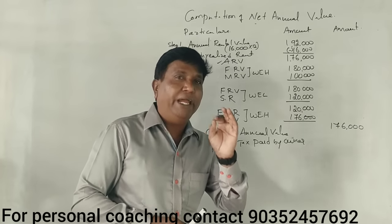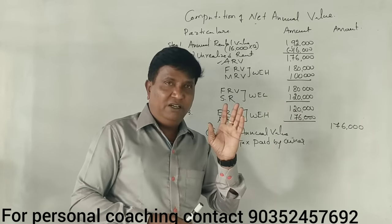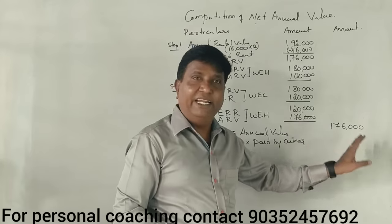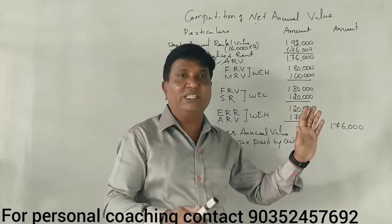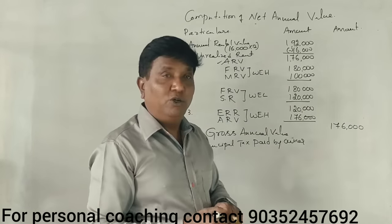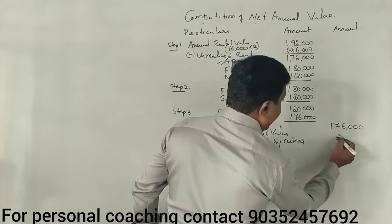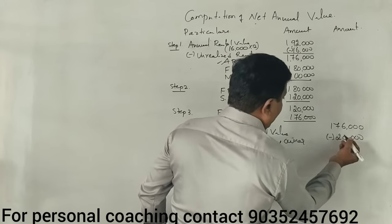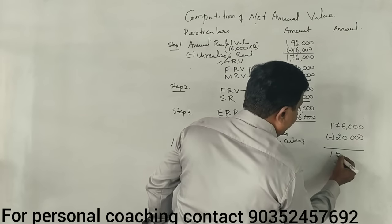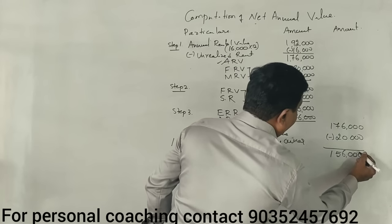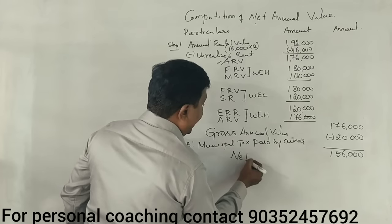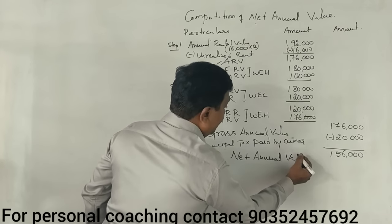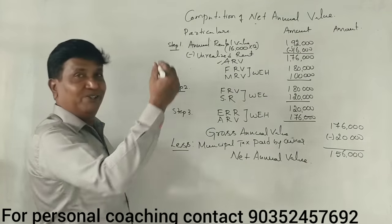Municipal taxes: if they are paid by the owner, whatever the amount of municipal taxes paid will be deducted from the Gross Annual Value. So minus 20,000. Now we get the Net Annual Value. This is a 6-mark question.